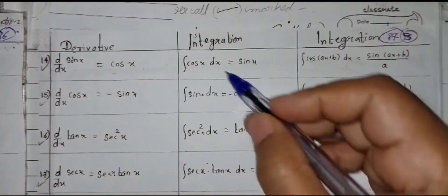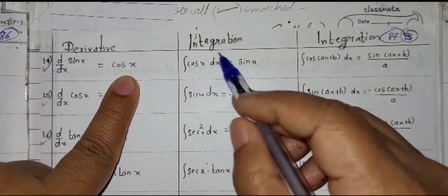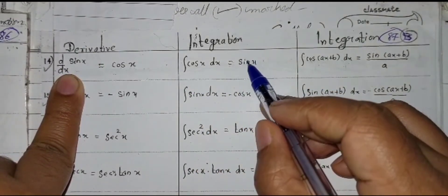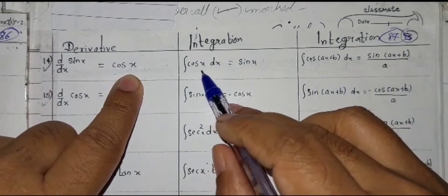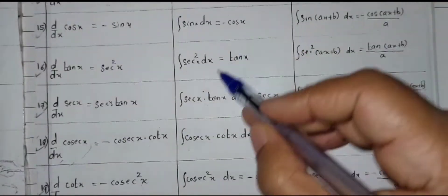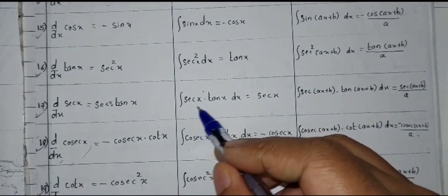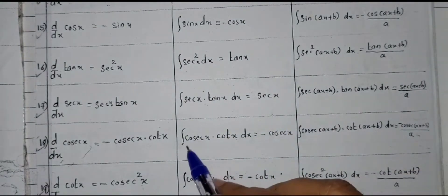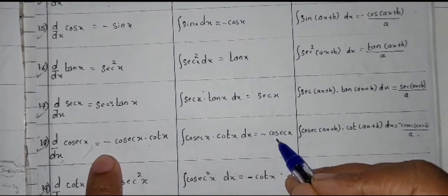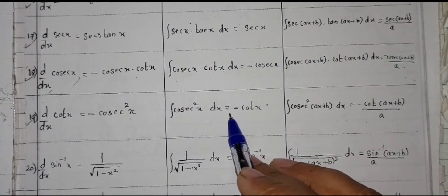For the trigonometric functions in the integration part: in derivation, LHS is the question and RHS is the answer; in integration it is the opposite. Integration of cos x dx is sin x. Integration of sin x dx is minus cos x. Integration of sec squared x dx is equal to tan x. Integration of cosec x cot x dx is equal to minus cosec x. Integration of cosec squared x dx is equal to minus cot x.